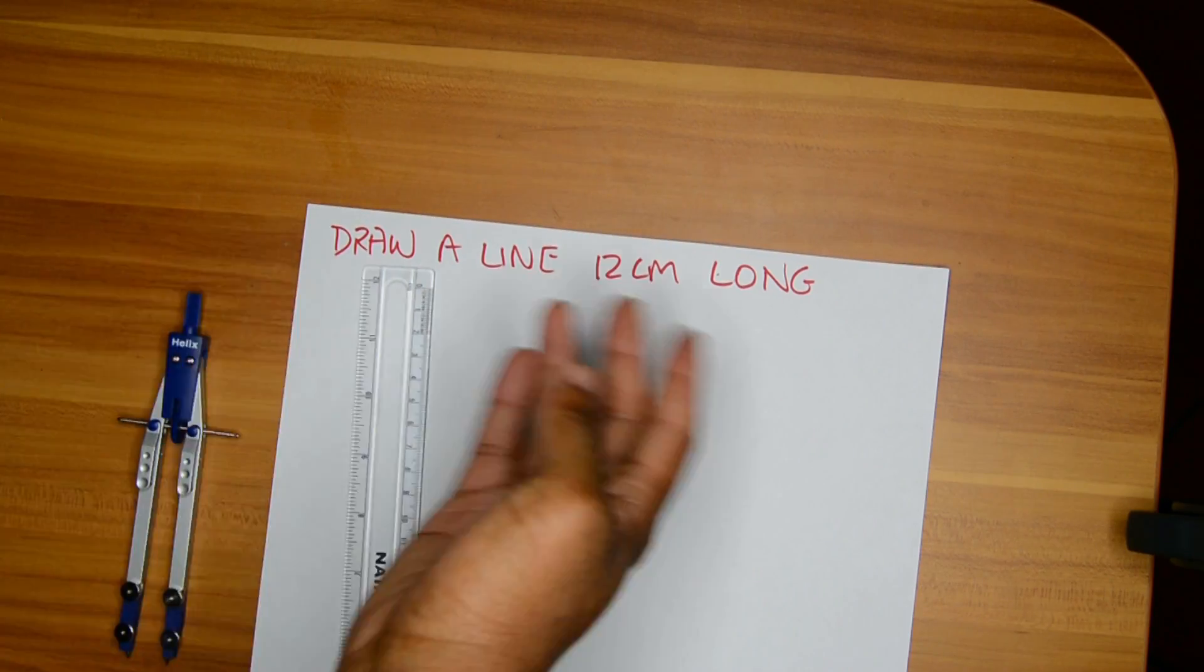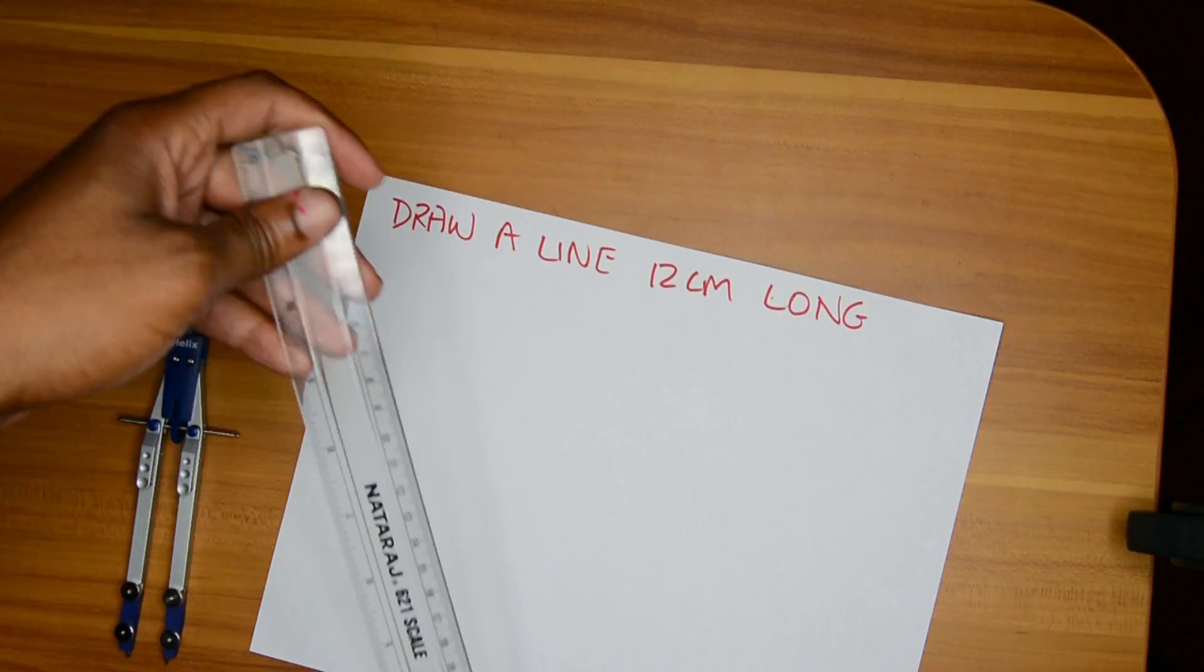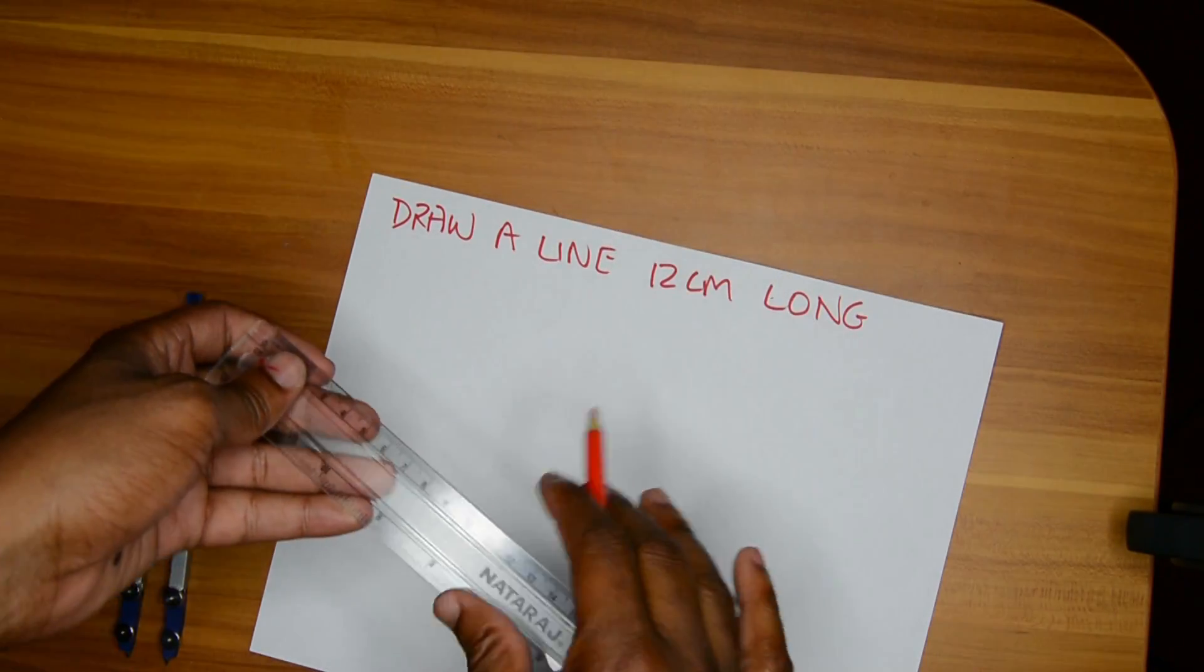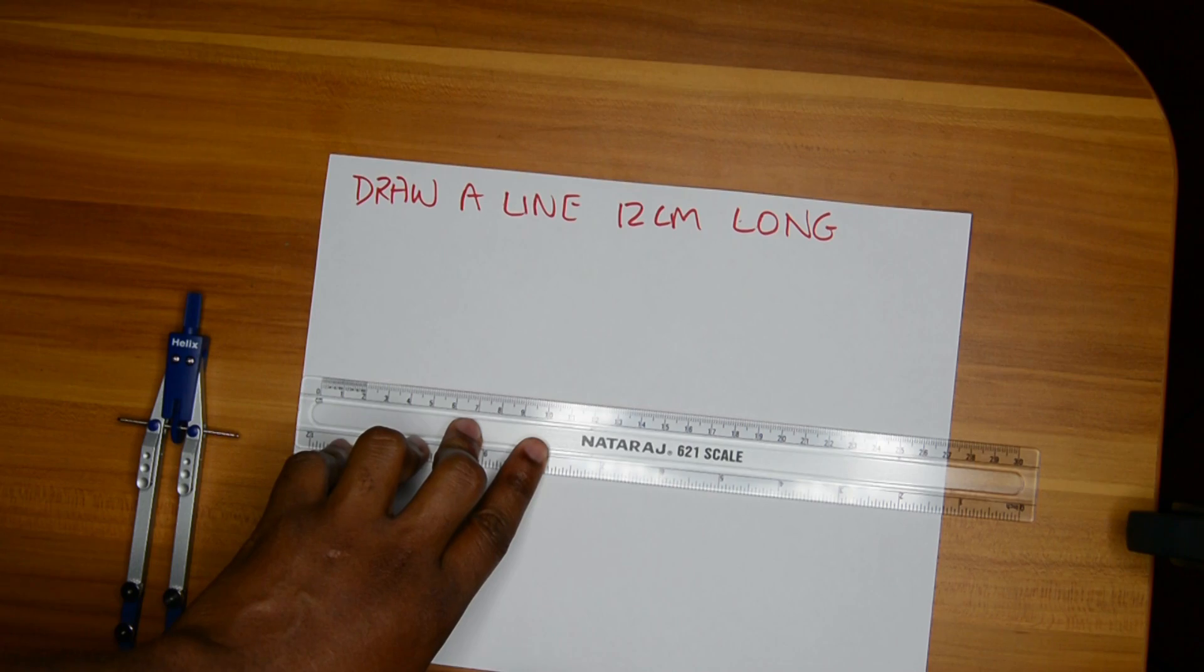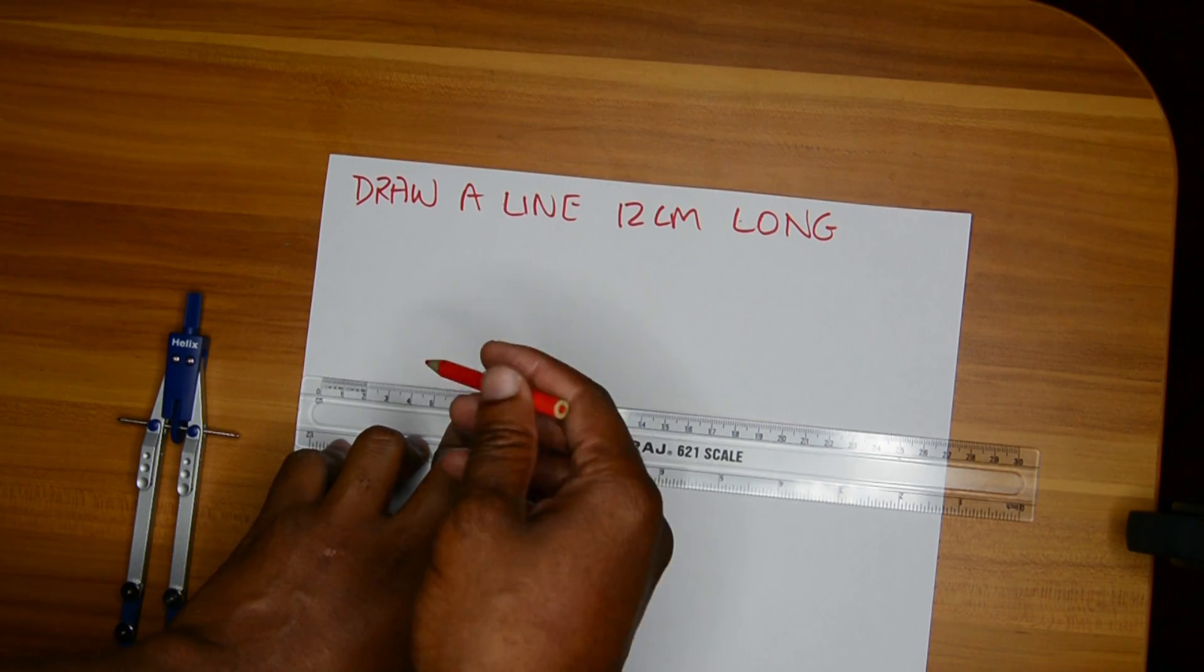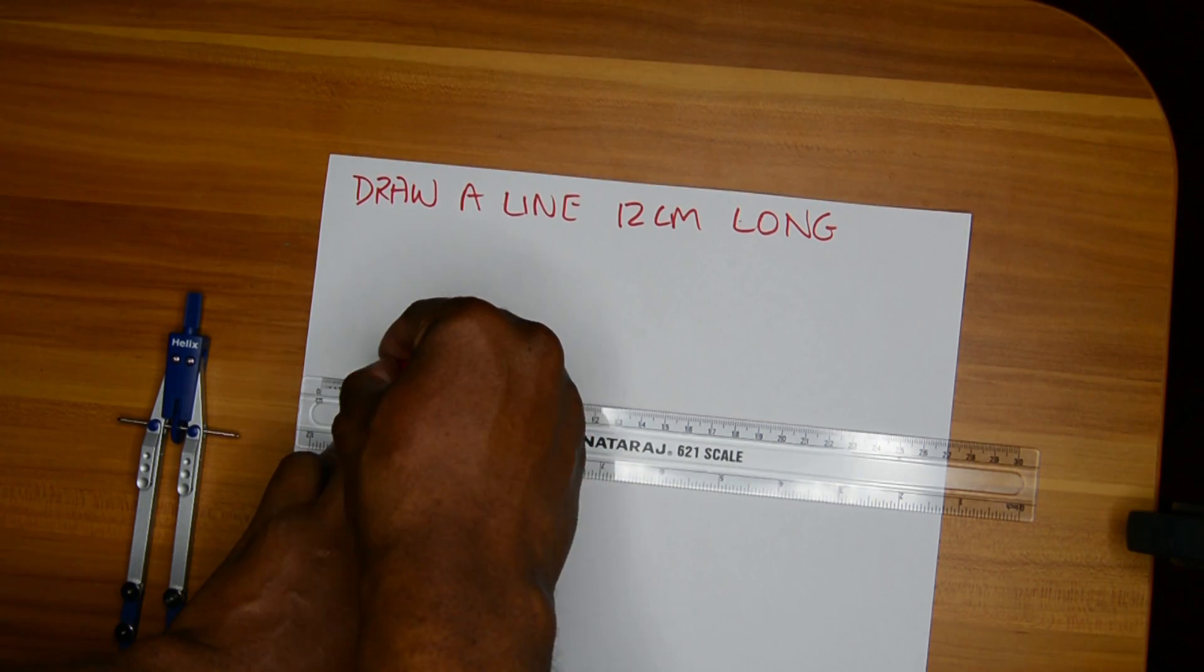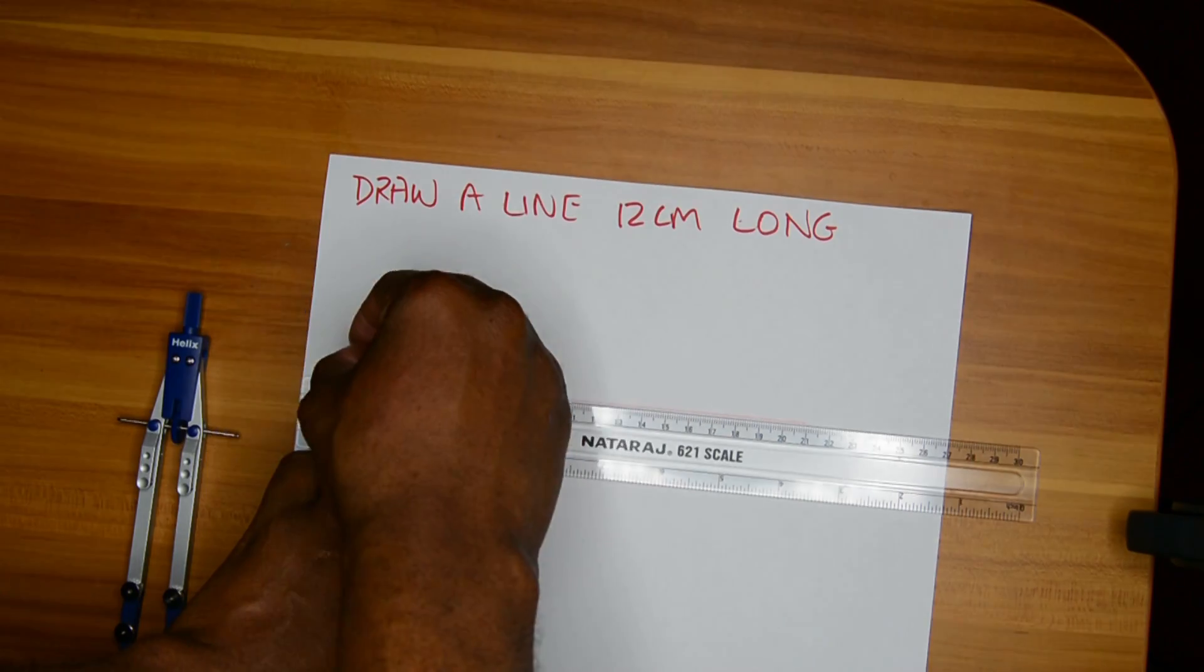Number 1: Draw a line 12cm long. For the sake of this video, I will use a red pencil so you'll see it easily. The first thing you do is draw a baseline, it could be any length, just make sure it's over 12cm long. This line needs to be lighter than your final line.